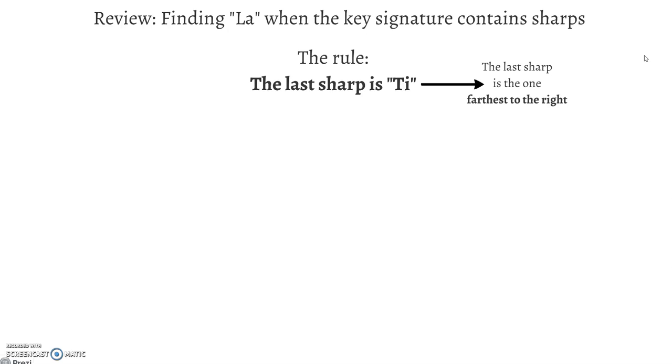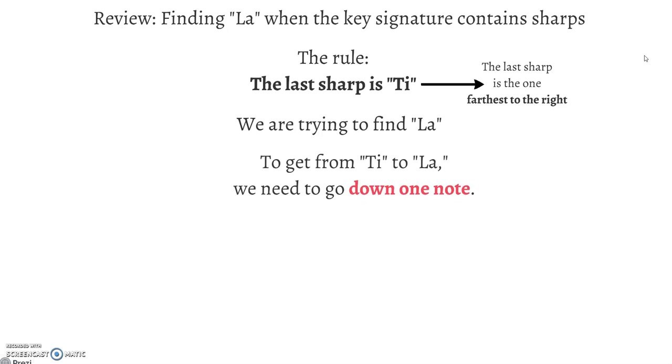The last sharp in the key signature is always Ti. We're trying to find La, so we're going to go down one because here's Ti. Below that is La.